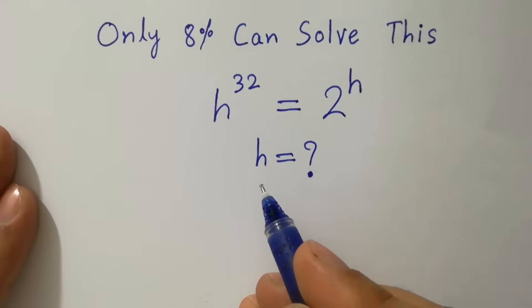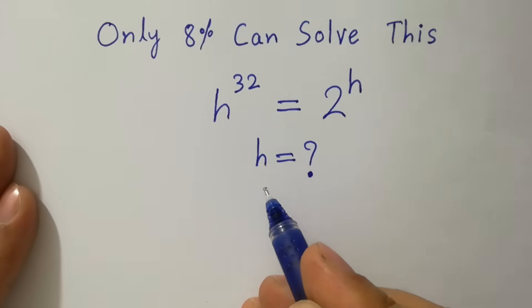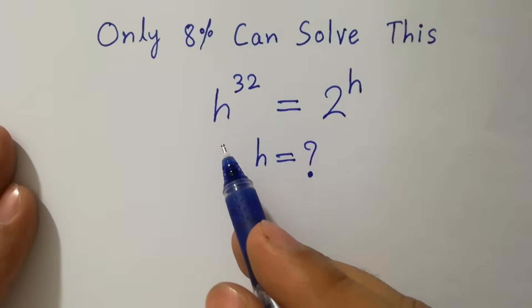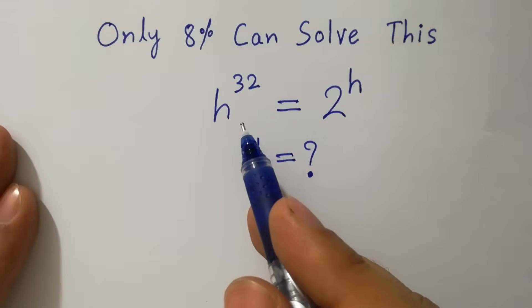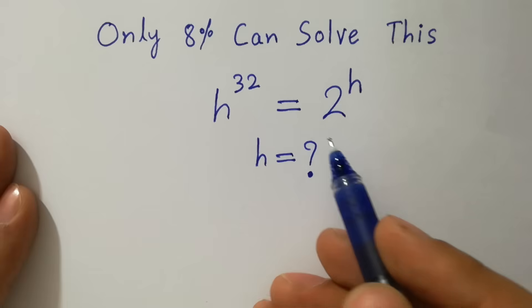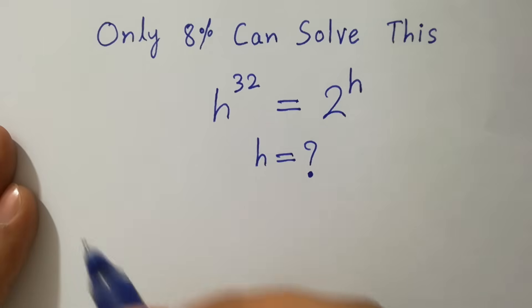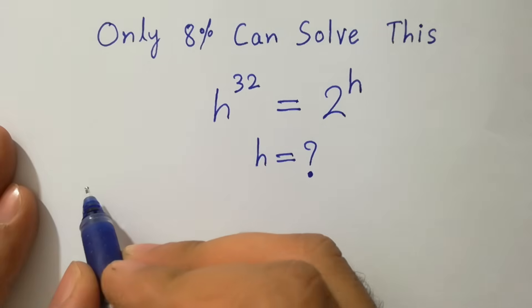Hello friends. Find the value of h if h to the power 32 equals 2 to the power h. Let's have a solution.